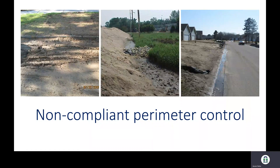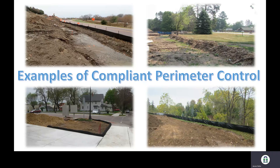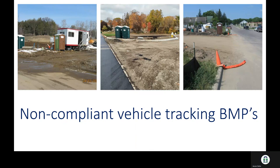Perimeter control is another basic requirement that can be tough in subdivisions where you have a curb right there and vehicles going in and out. Bio-logs are popular because they're easy to move — you're not having to trench a fence in right against the curb. Compliant options include logs, fences, and berms — whether wood chip or soil. Using materials already on your site is great because it's more cost-effective. If you're clearing trees and wood-chipping them, consider using that on-site as a filter berm for perimeter control.